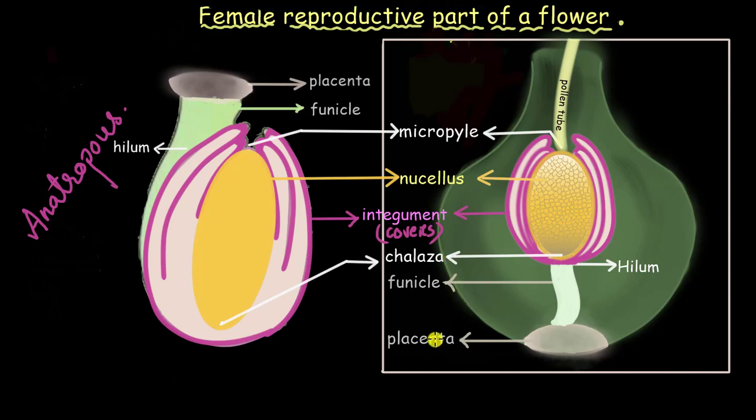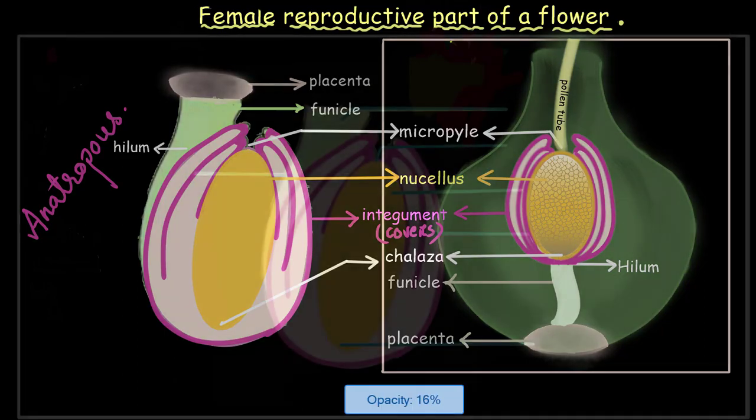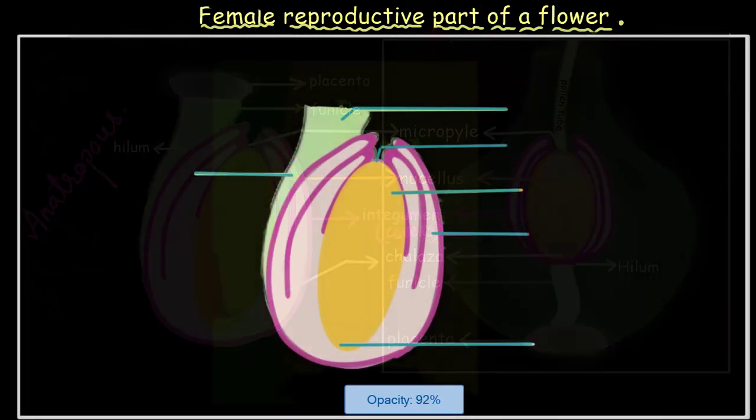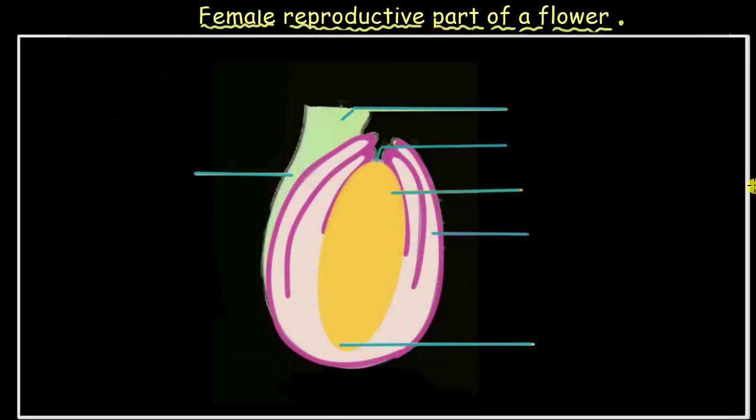In our future video, we will talk about how the cells of the nucellus divide and form female gametes. But before we end the video here, I would like to leave you with an unlabeled diagram of an ovule. How about you pause the video and try and label different parts.